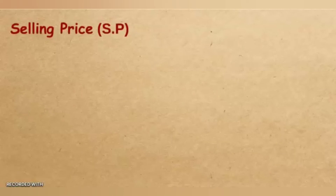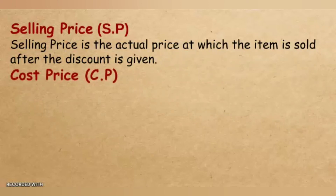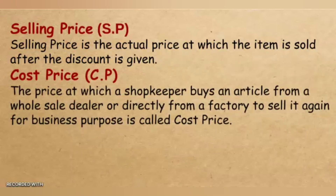The selling price is the actual price at which the item is sold after the discount is given. The cost price is the price at which a shopkeeper buys an article from a wholesale dealer, a shop, or directly from a factory to sell it again for business purposes.